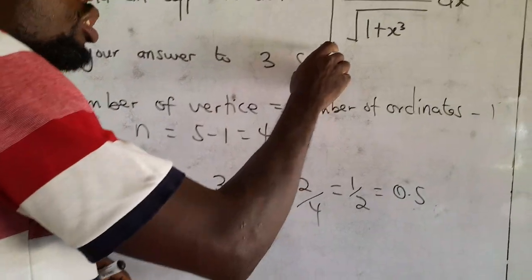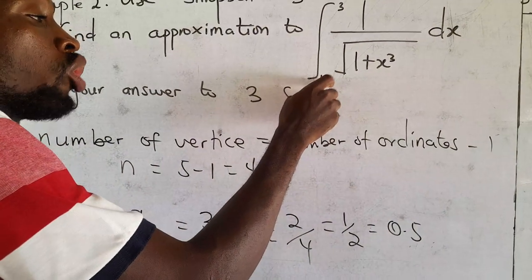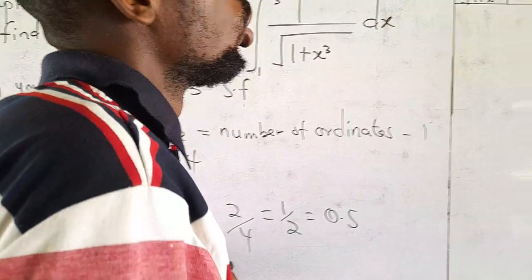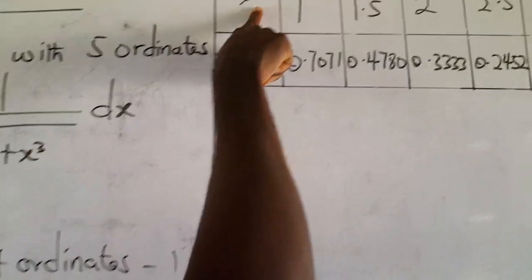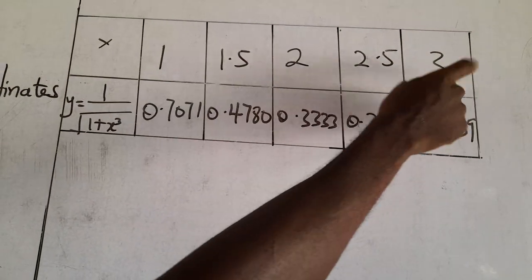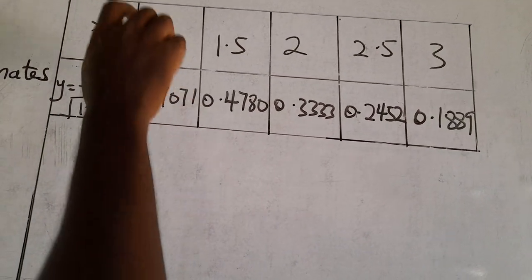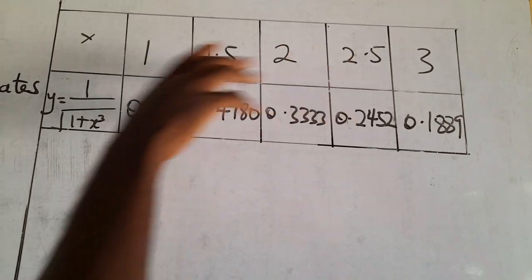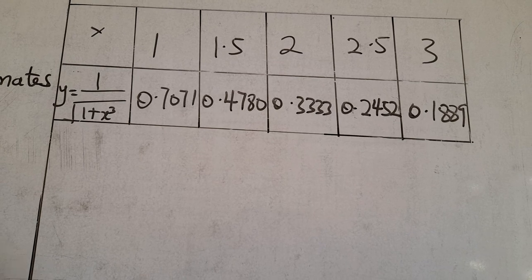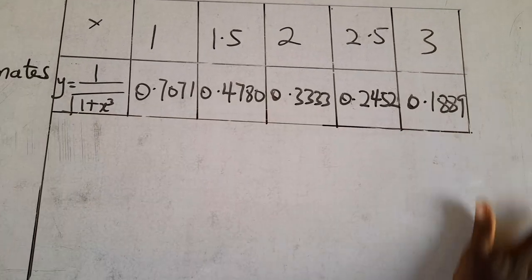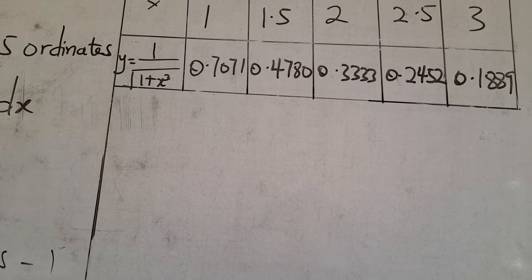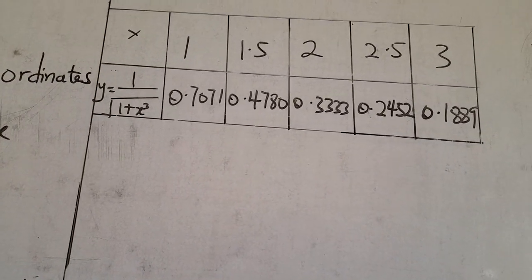With h = 0.5, we start values of x from 1 to 3 with an interval of 0.5. So the x values in the table are: 1, 1.5, 2, 2.5, and 3. When we substitute these values into the function 1/√(1+x³), we get the corresponding y values.